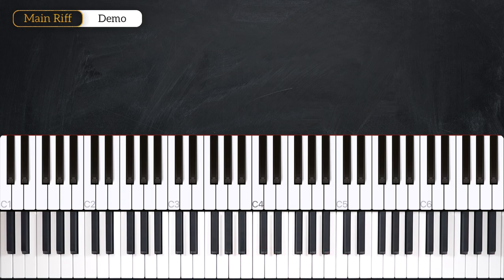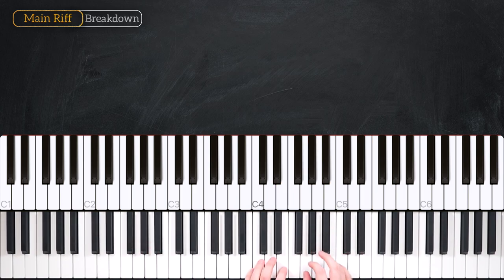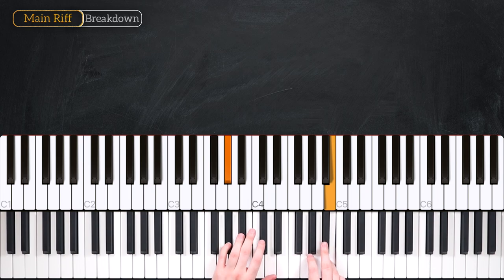Alright, let's get straight into the breakdown. We're in the key of E Major. We've got three main chords to look at. We've got our E, C sharp minor 7, and G sharp minor before going back to the E.